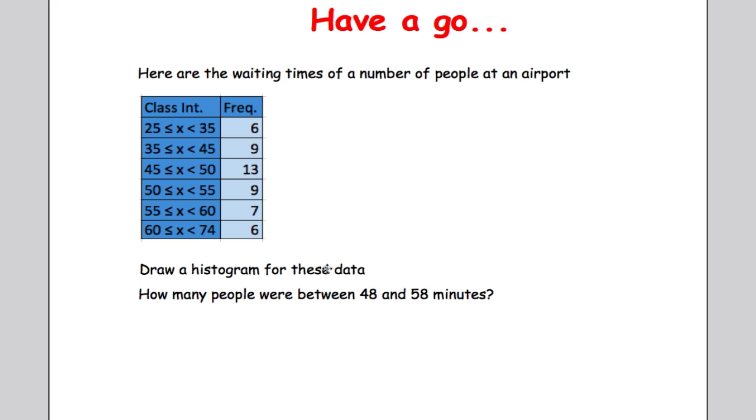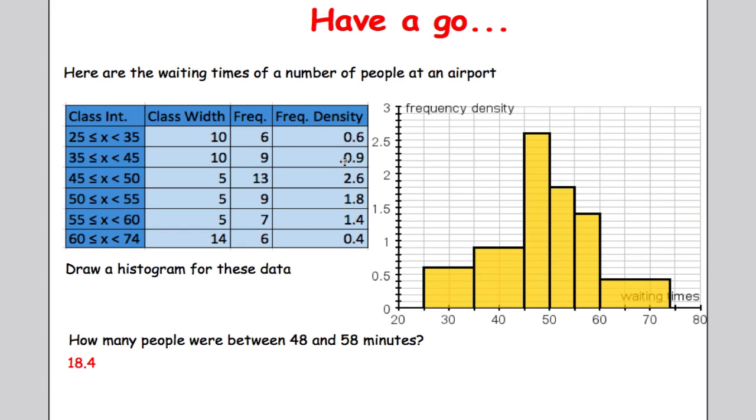Hopefully you've had a go at that. Here are the solutions. This is the table you should have drawn. This is what your histogram should look like. You may have it scaled differently on the y-axis, but the overall shape of the histogram should be the same. How many people were between 48 and 58 minutes? You should have calculated that to be 18.4.